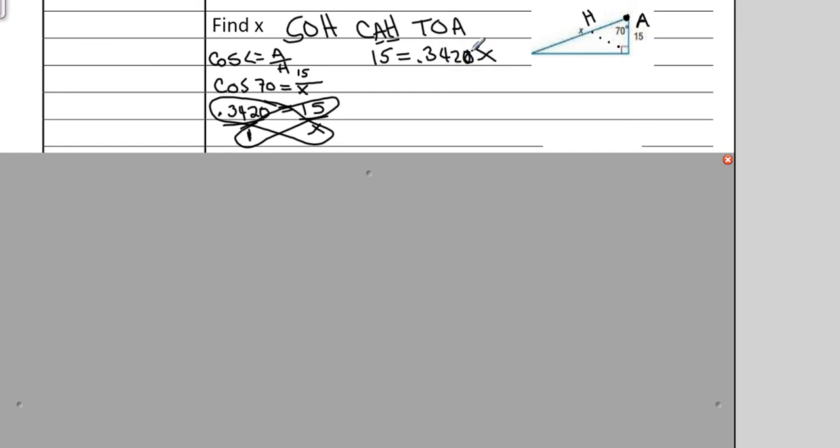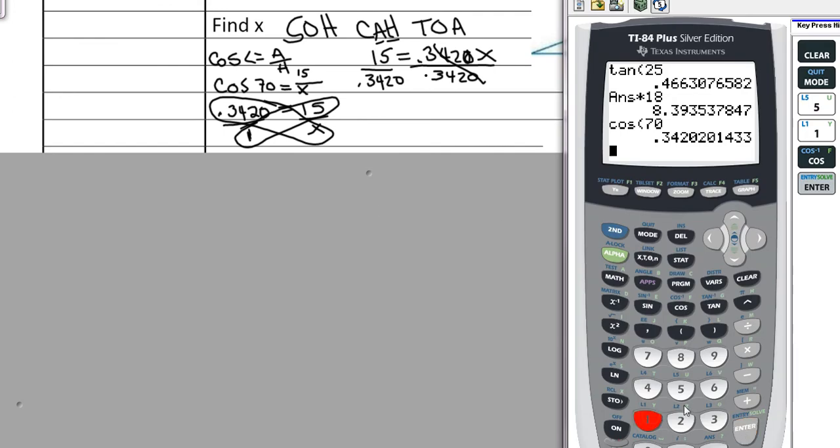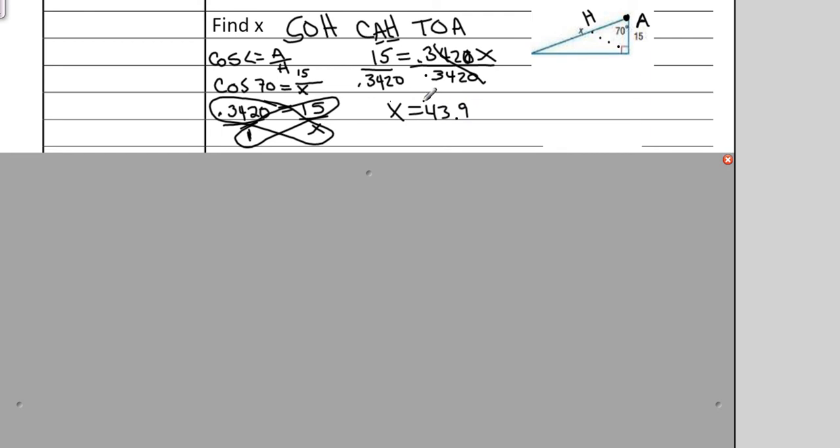And that equals .3420 times x. And this is the one that confuses a lot of people just because it's two steps. You have to cross multiply and then you're going to have to divide to get x by itself. So the number is .3420x. We want to get x by itself. So we divide both sides by .3420. And that will isolate our x. So I do 15 divided by .3420. And that will give me x is 43.9 for this side right here. And it's the hypotenuse and it's bigger than the 15. So at least we know we're on the right track.